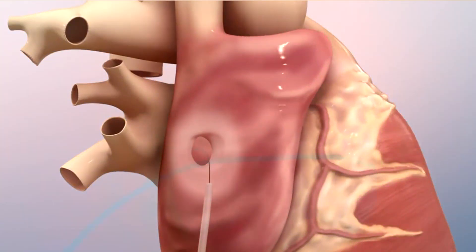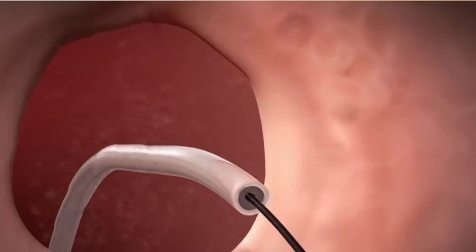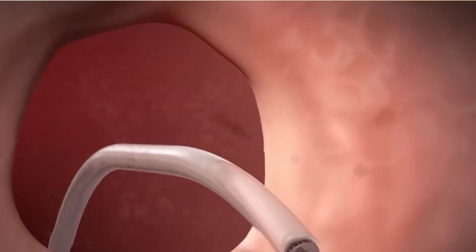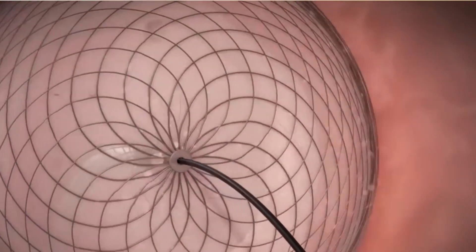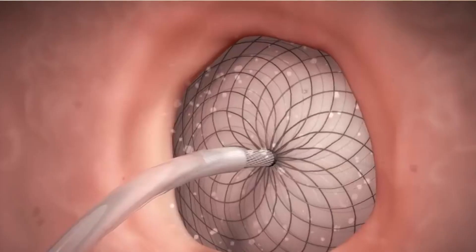Treatment of congenital heart disease depends on its cause. For those described as having a hole in the heart, some may actually close spontaneously on their own. But for those that progress and the child becomes symptomatic and requires treatment, they may actually need open heart surgery to rectify the defects in the structure of the heart.